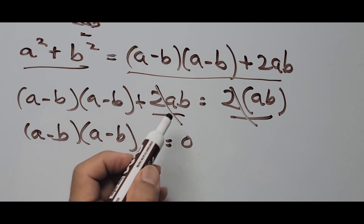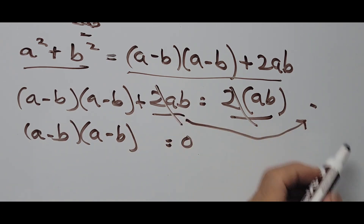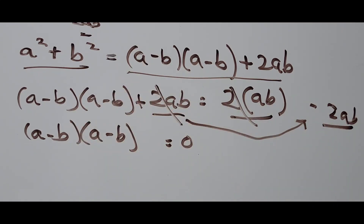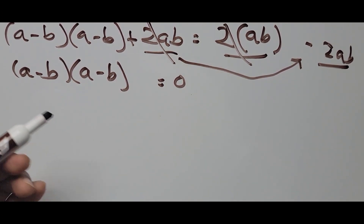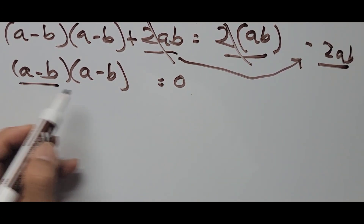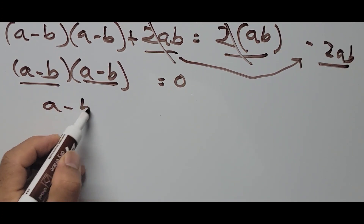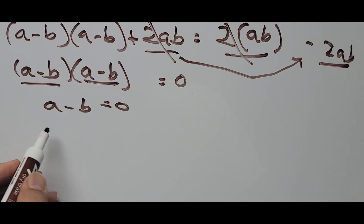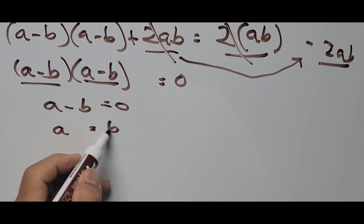Since we have two identical factors, that means a minus b equals zero. Transposing b to the other side, a equals b.